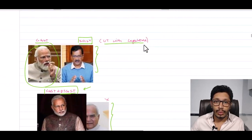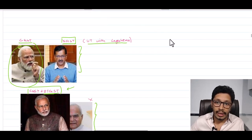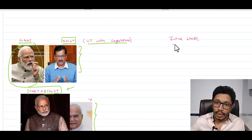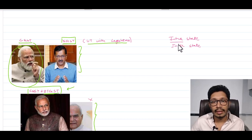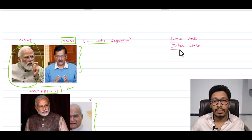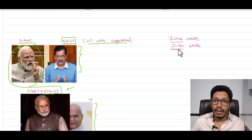Now there are two important concepts: Intrastate Transaction and Interstate Transaction. Intrastate means transactions that occur within a state — under the same state. Interstate means transactions that occur between different states, such as from Rajasthan to another state.